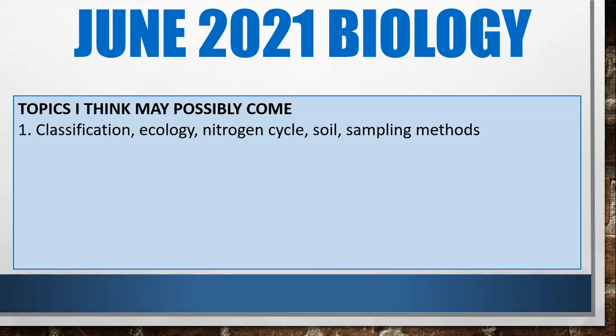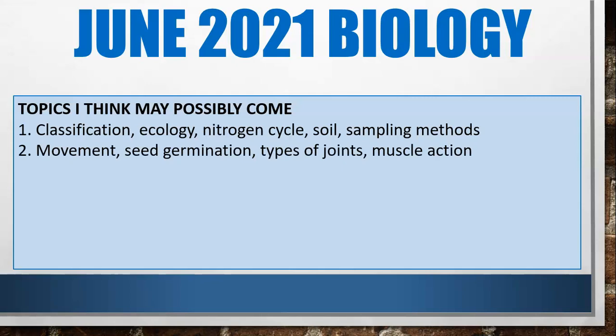If not ecologically based, it may be something to do with seed germination or movement — something related to joints and muscle action, the different types of movement and seed germination. I haven't seen a question like that in a while, so a movement-related topic — the types of movement in plants and animals, a diagram of the joint, the different types of joints, labeling the joint, possibly muscle action.